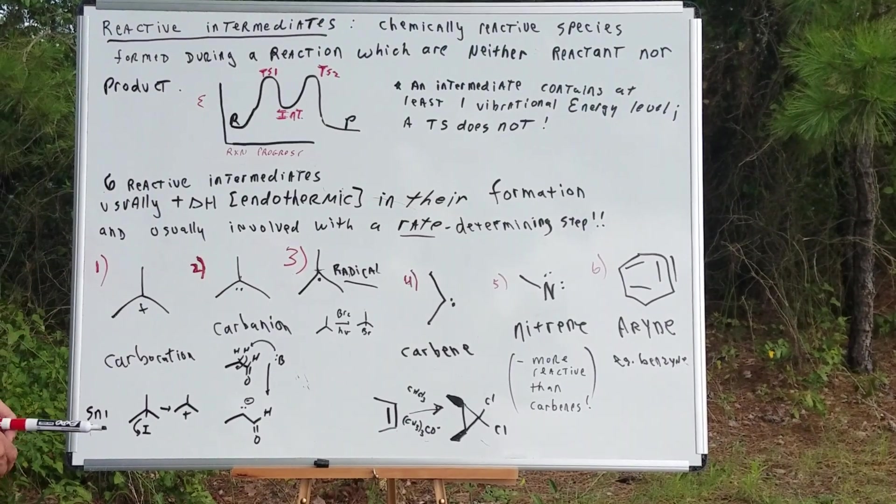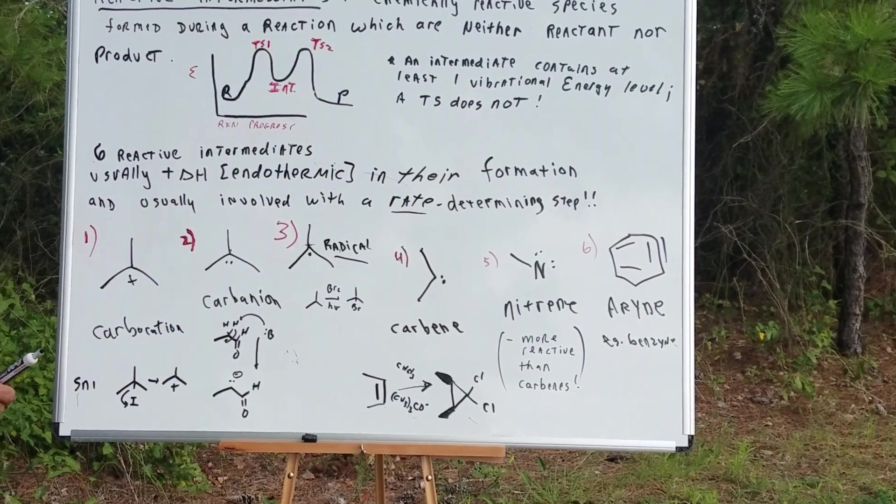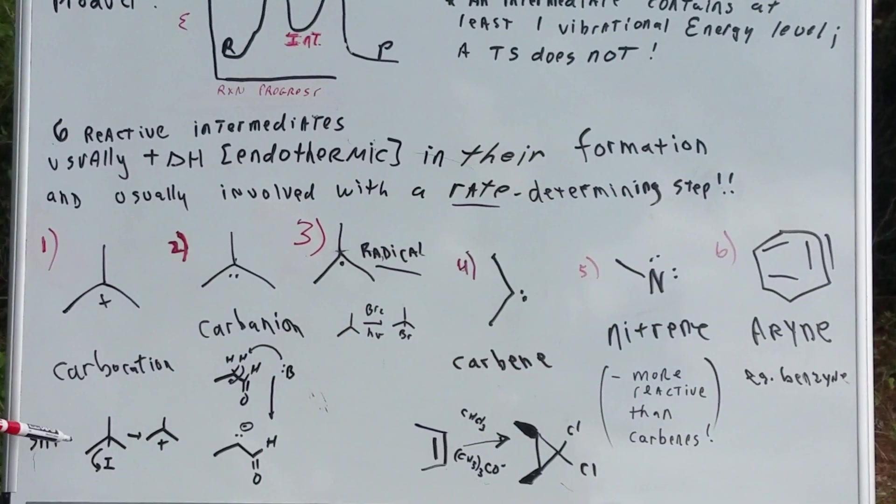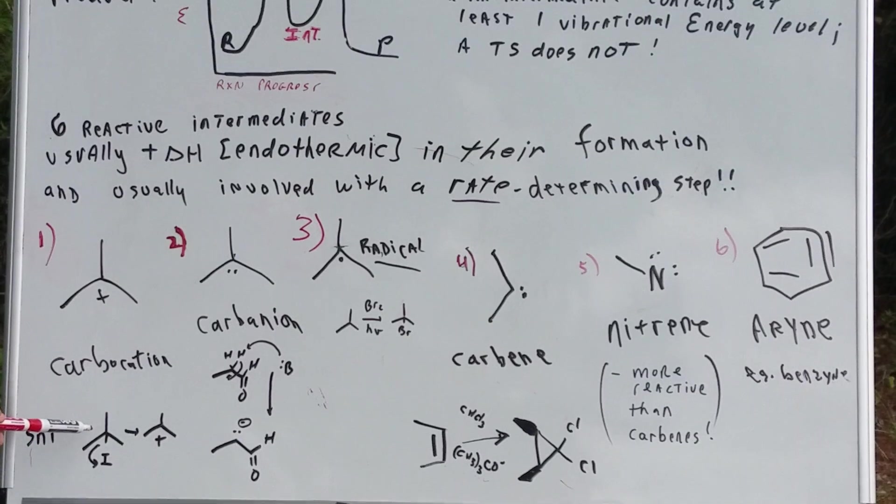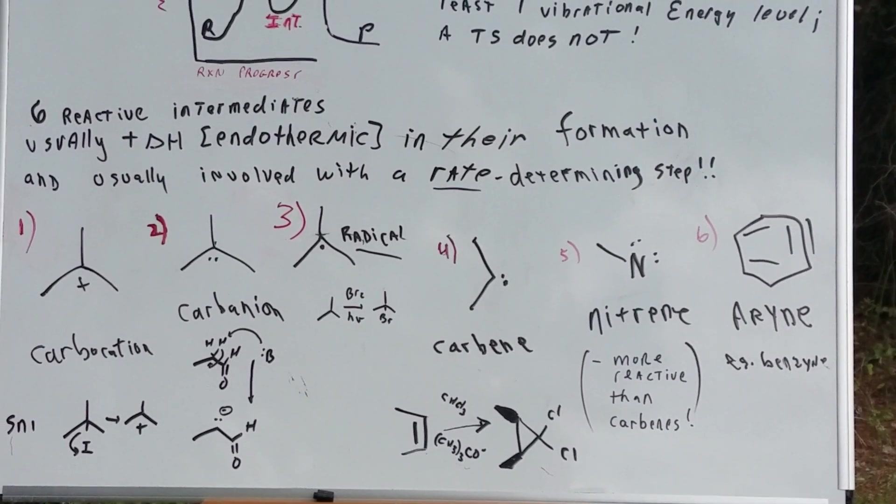For example, if you look at number one, this is a carbocation. It's a carbon with a positive charge. For example, we see this in an SN1 reaction. The leaving group leaves and you form a carbocation.